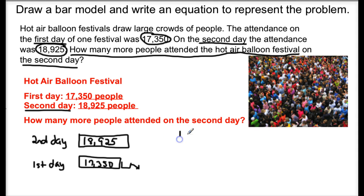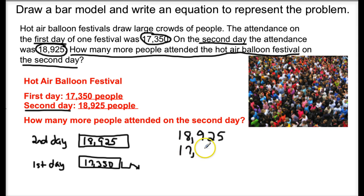I need to take the larger value, which is the second day — 18,925 — and subtract the smaller value from it. The smaller attendance was 17,350, and we needed to subtract.